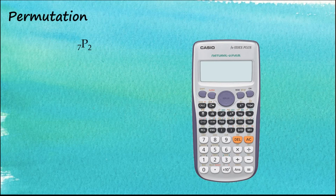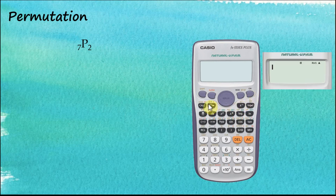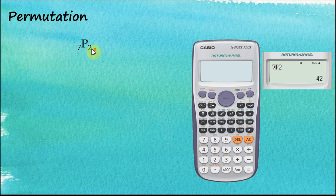We can also use the calculator to find permutations. For example, let's find 7P2. The permutation button is here on the calculator. Switch it on, enter 7, then press Shift and the permutation button, then enter 2 and press equal to get the answer.